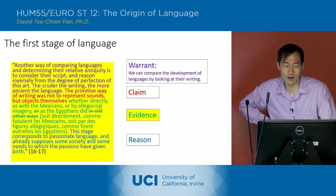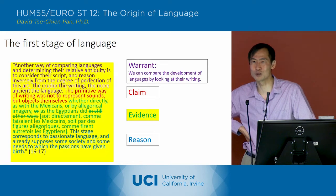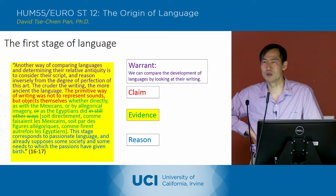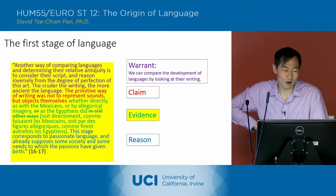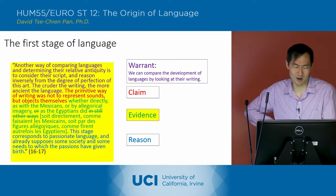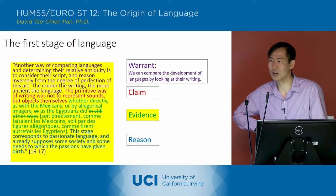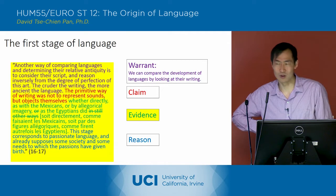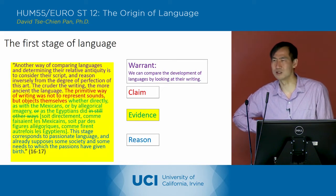The claim is that the primitive way of writing was not to represent sounds, but objects themselves. This is the first claim about how different languages in the present relate to each other. He has evidence where he says whether directly, as with the Mexicans, or by allegorical imagery, as the Egyptians did. The translation is not very accurate at this point, so I've changed the translation on the slide.